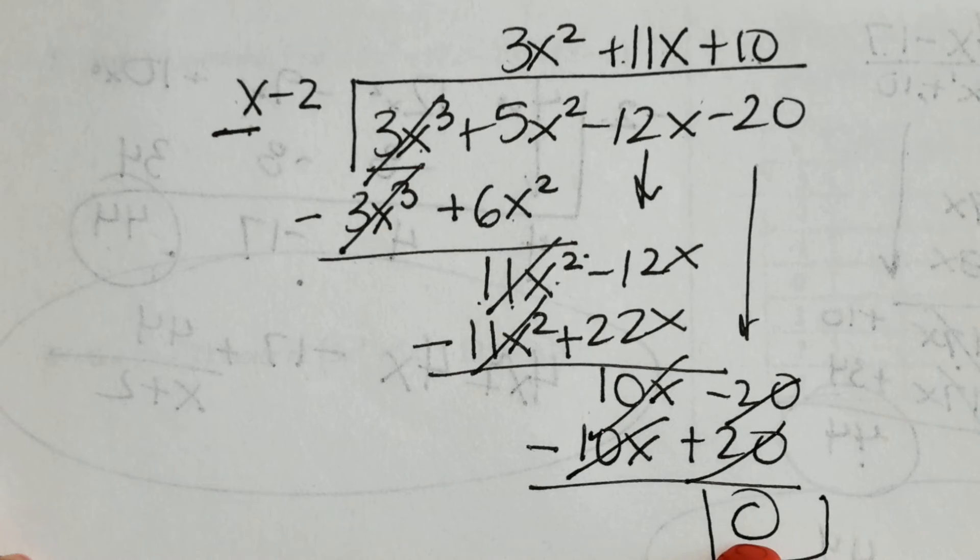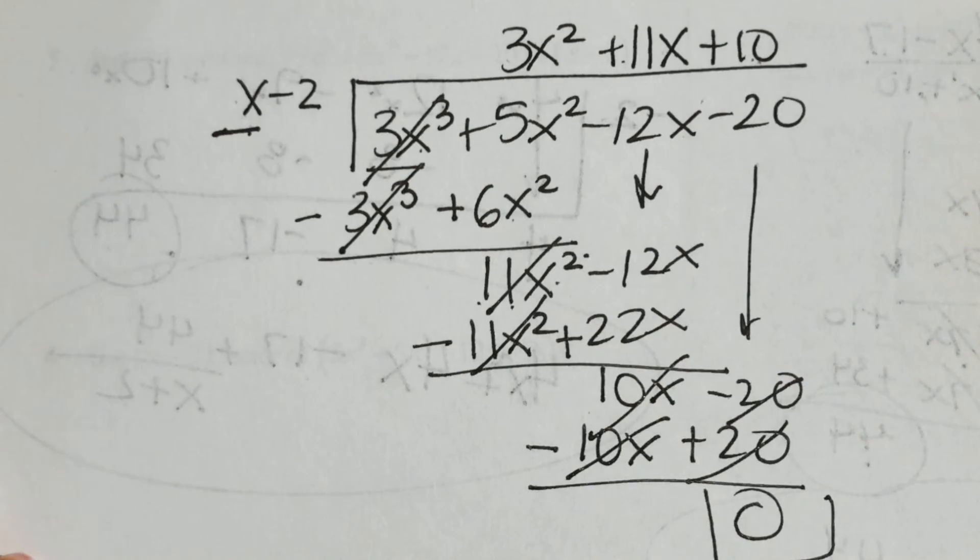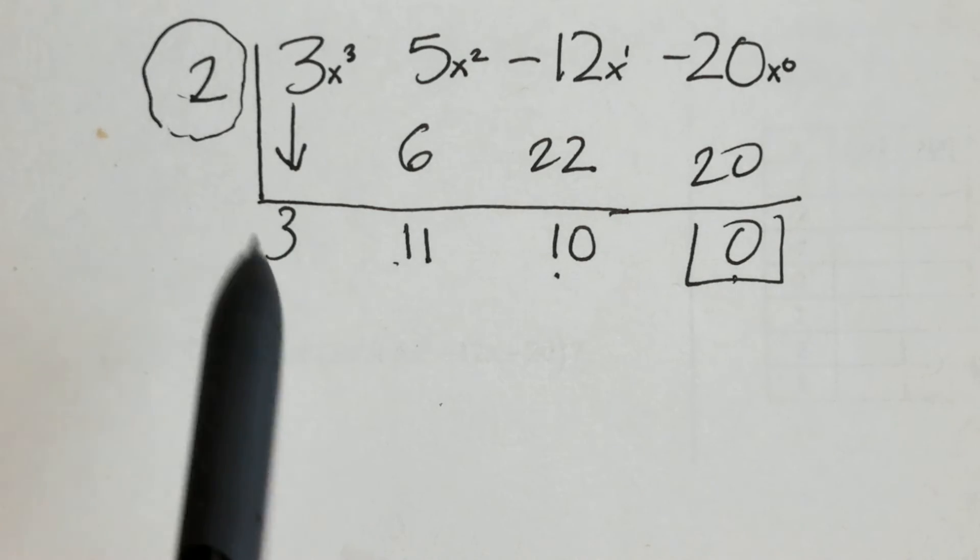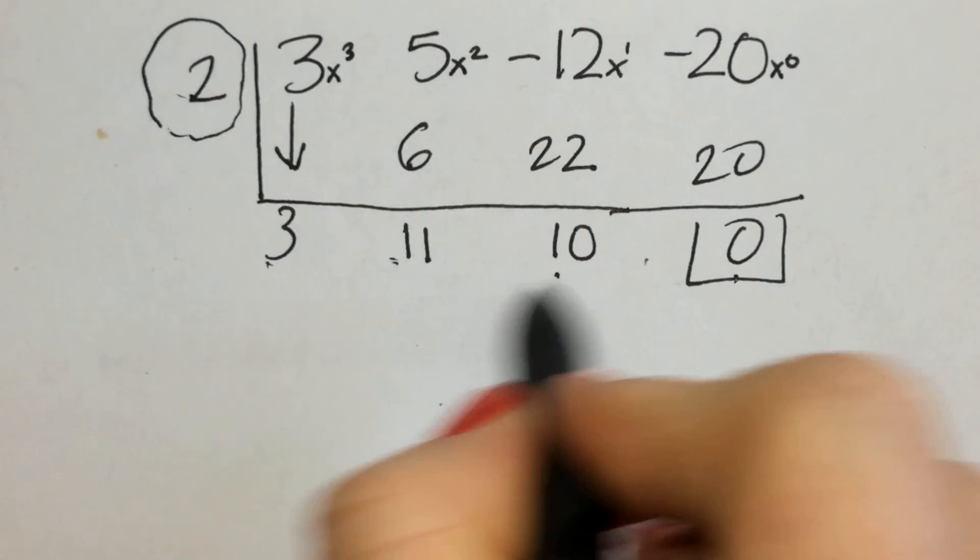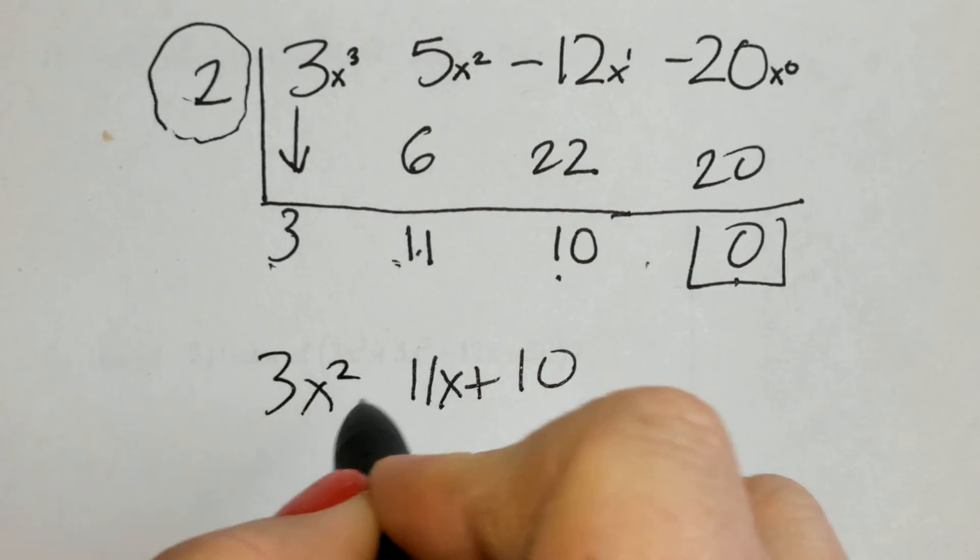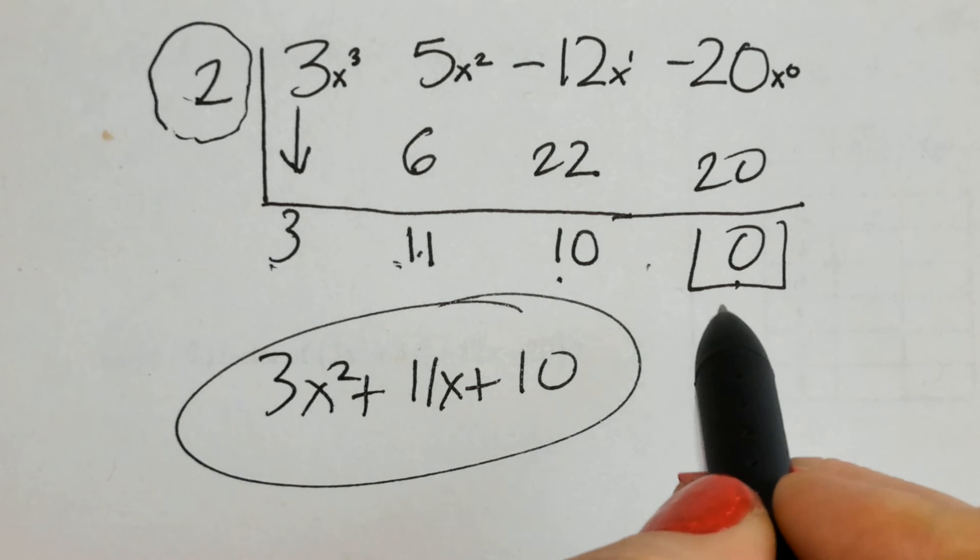So, notice I have a 0 here. And notice I have 3, 11, and 10 on top. Also, I have 0's remainder. And I have 3, 11, and 10. So, it starts with nothing. No x's. 1x. 2x. Here's my answer. No remainder.